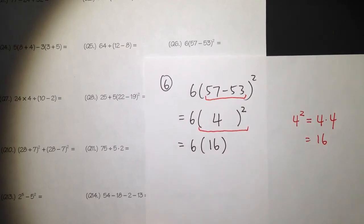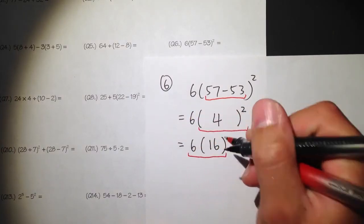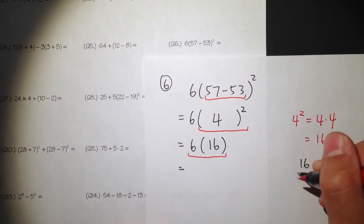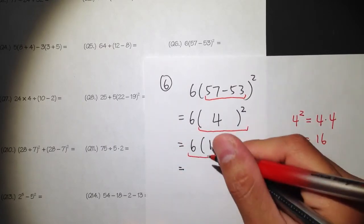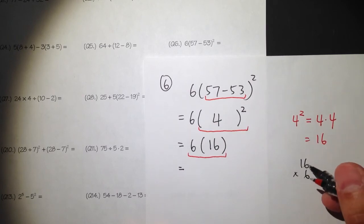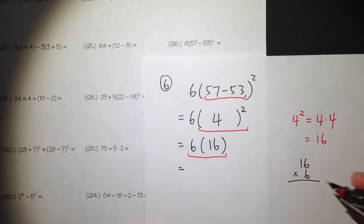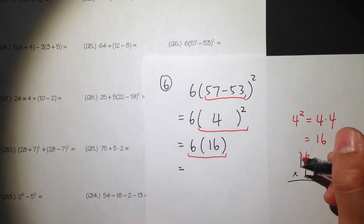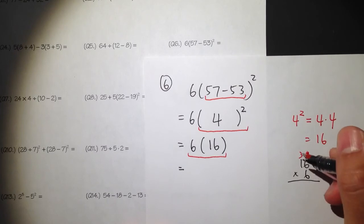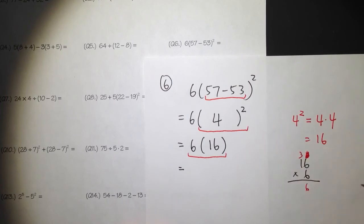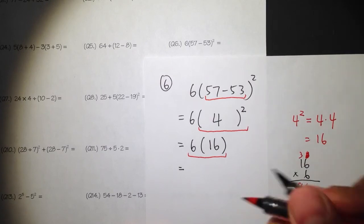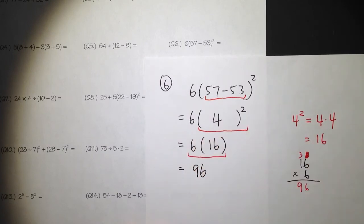For the last step, we just need to multiply 6 times 16. You can do this on the side — 16 times 6. It's easier to put the number with more digits on top and 6 on the bottom. 6 times 6 is 36, and 6 times 1 is 6 plus the carried 3 is 9. So the answer is 96.